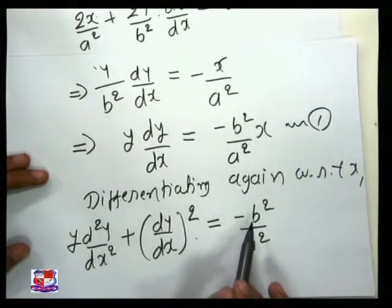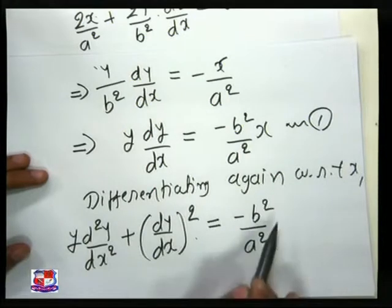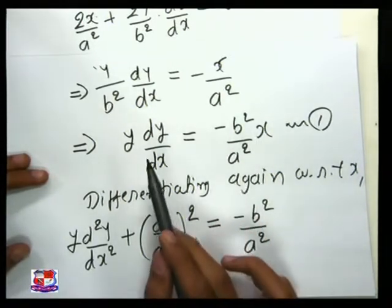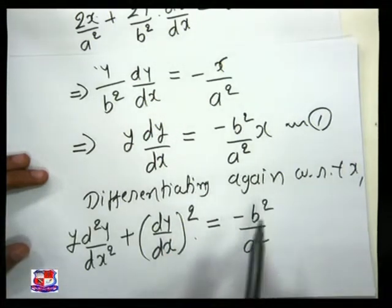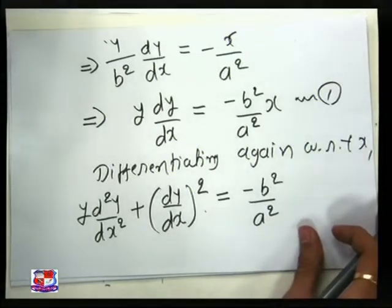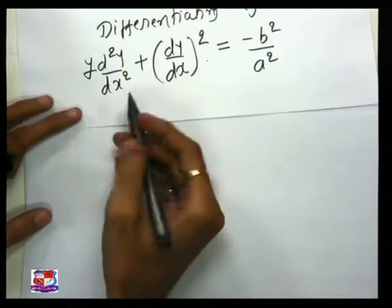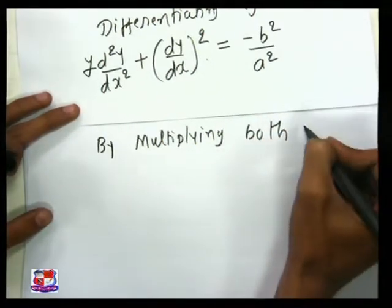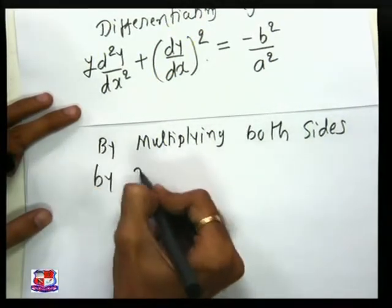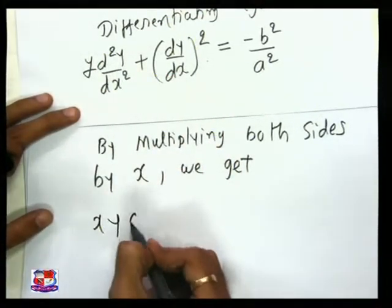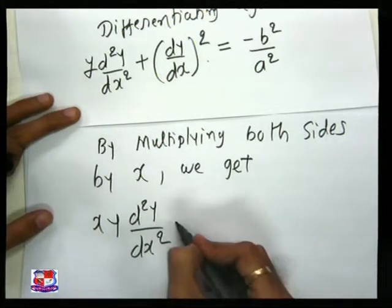If we want to eliminate the arbitrary constant from this equation and remove minus b²/a² from here, we can use this equation because minus b²/a² into x is equal to y·(dy/dx). We need just x here. So if we multiply this equation both sides by x, we will get x·y·(d²y/dx²) plus x·(dy/dx)².